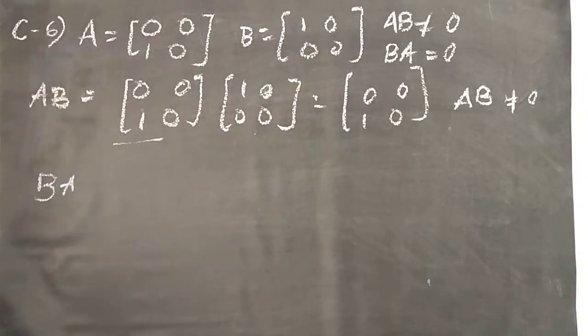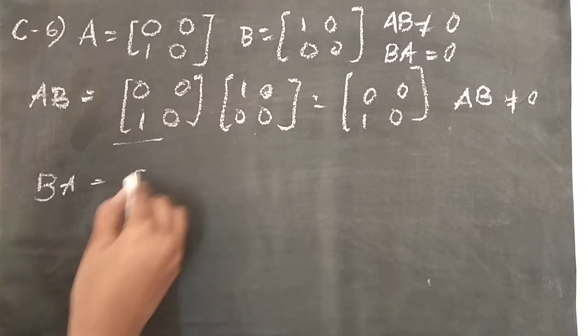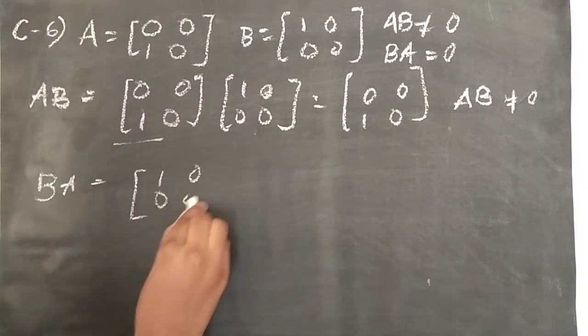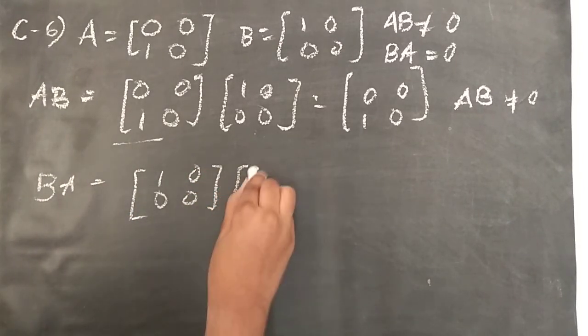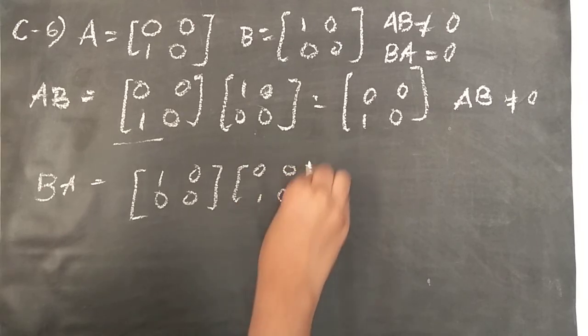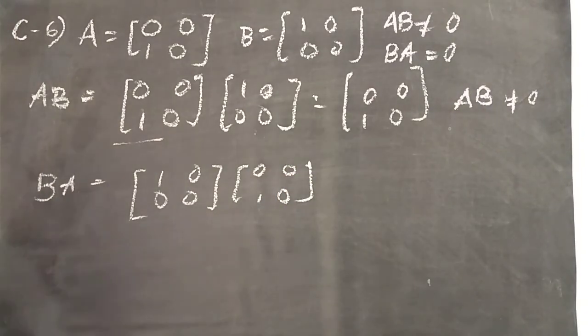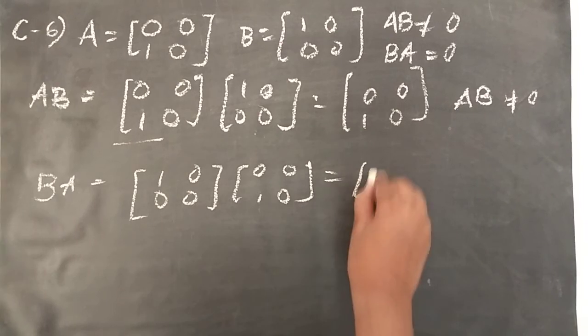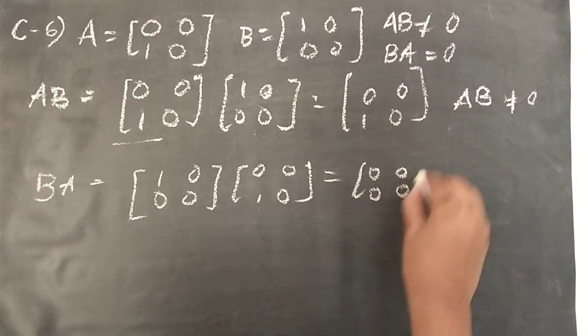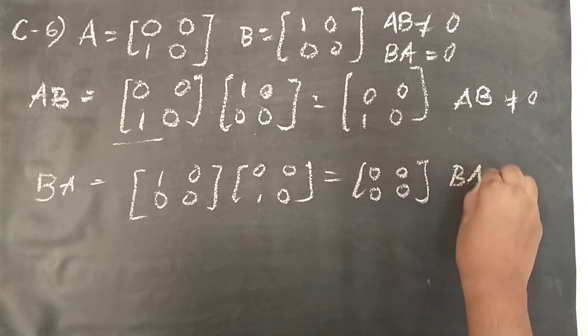Now BA is equal to 0, we have to prove. 1, 0, 0, 0 into 0, 0, 1, 0. Yes, it is 0, 0, 0, 0 is the answer. That means it is 0 only. So BA is 0.